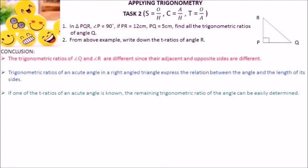Through task 2, we can conclude that the trigonometric ratios of angles Q and R are different since their adjacent and opposite sides are also different. Trigonometric ratios of an acute angle in a right-angle triangle express the relation between the angle and the length of its sides. If one of the T-ratios of an acute angle is known, the remaining trigonometric ratios of the same angle can be easily determined.